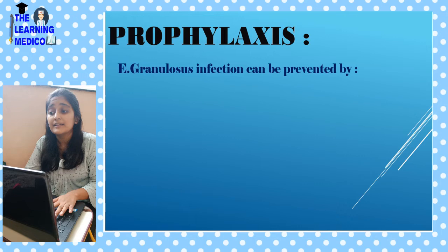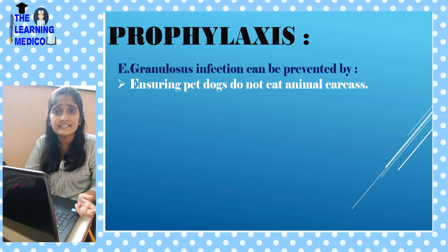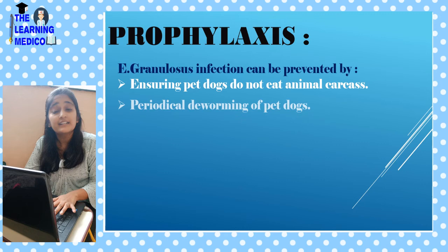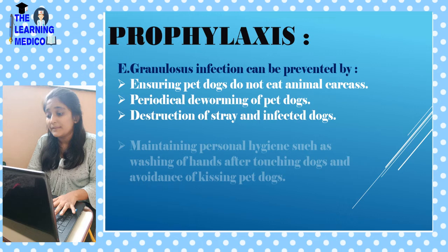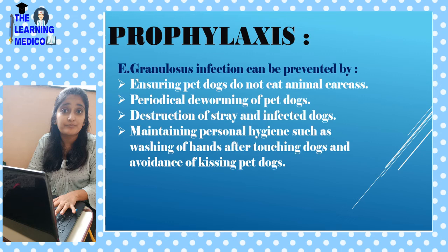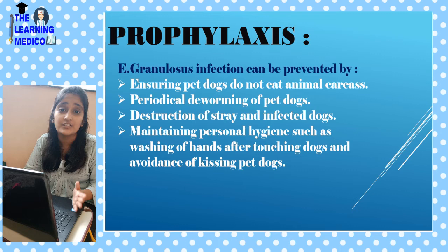Prevention: ensure pet dogs do not eat animal carcasses; periodical deworming of dogs to prevent infection; destruction of stray and infected dogs; maintaining personal hygiene — such as washing hands after touching dogs and avoiding kissing pet dogs, as this can transmit infection.